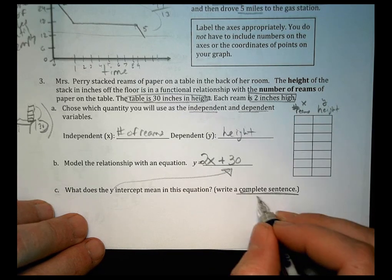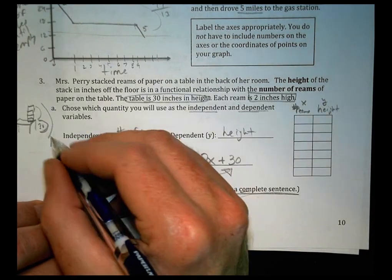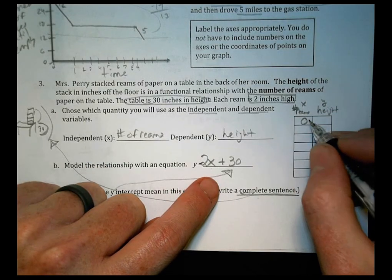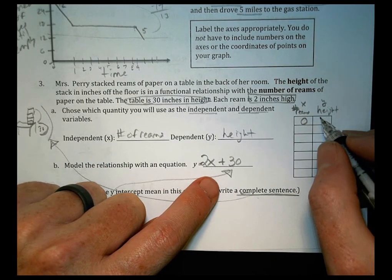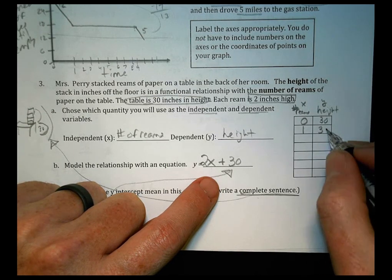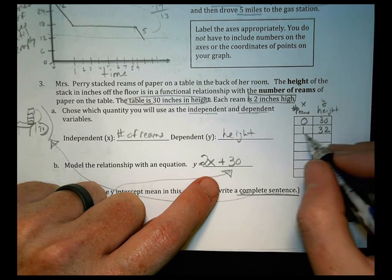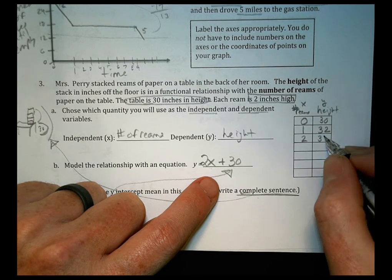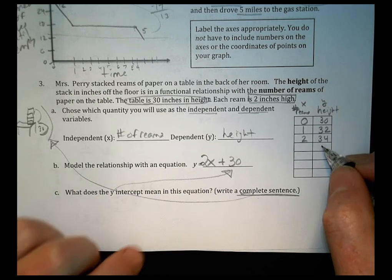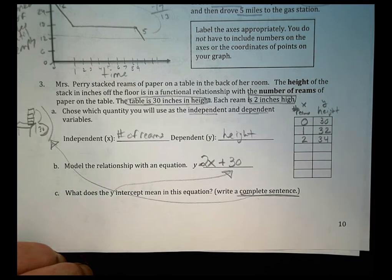So what's that 30 mean? Describe here in a sentence what we talked about, about that being the height of the table, your starting point. So if I had zero reams of paper, I would still be at 30 inches high. That's the high of the table. If I had a one ream of paper, that would be at 30 plus two, 32. If I had two, I'd be at 34 and so on. So you can complete that table there with some more values if you choose. I'm going to leave it right there for now.